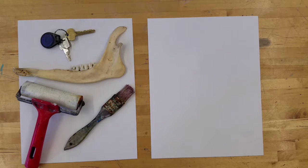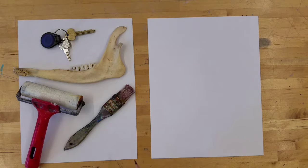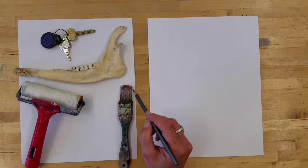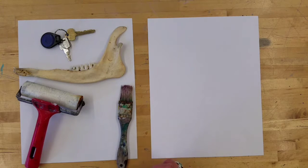We've been practicing looking at edges, lines, and shapes and spaces, so this is just another step in that direction. We're going to be doing something called contour drawing, which is looking at and drawing the edges of things.